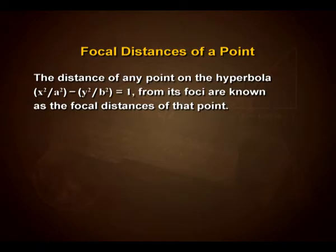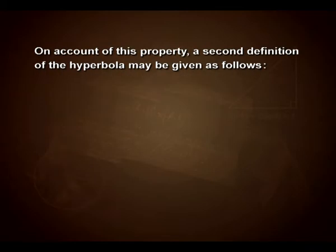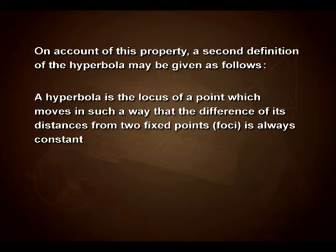Now let us see how to calculate the focal distances of a point. The distances of any point on the hyperbola x²/a² − y²/b² = 1 from its foci are known as the focal distances of that point. The difference of the focal distances of any point on the hyperbola is constant and equal to the length of the transverse axis. Hence a hyperbola may also be defined as the locus of a point whose difference of distances from two fixed points (foci) is always constant.